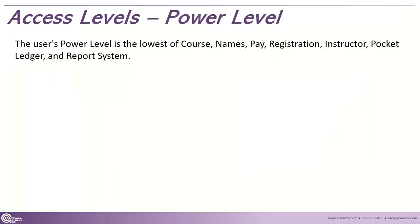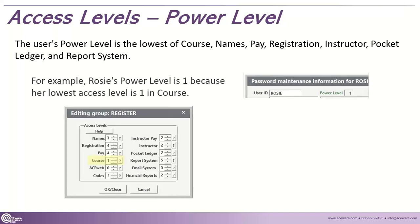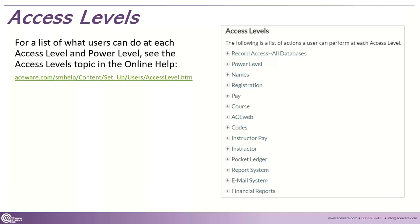The power level is going to be the lowest of: names, pay, registration, instructors, pocket ledger, and reports. It looks at the overall and then gives you your power level. For example, say we have this user Rosie — Rosie is in the register group. Looking at her access levels, there's a three in names, five in email, but that course one is set to one. So Rosie's power level is one. Our online help gives you a whole page where you can expand each topic and see exactly what each of those levels entail.